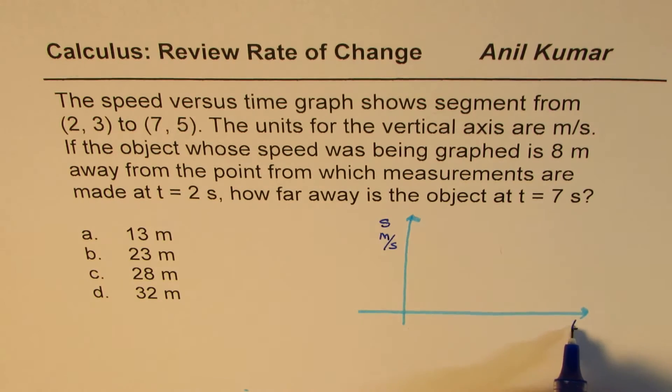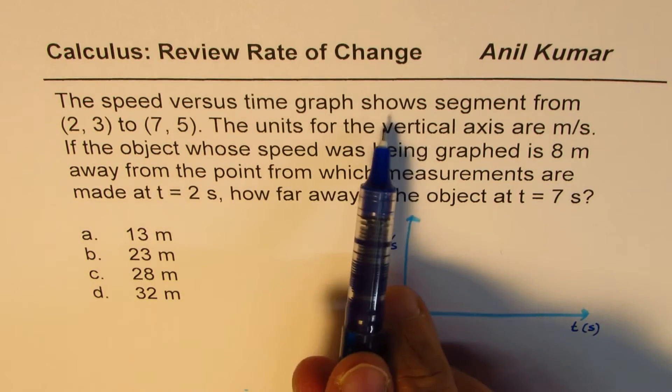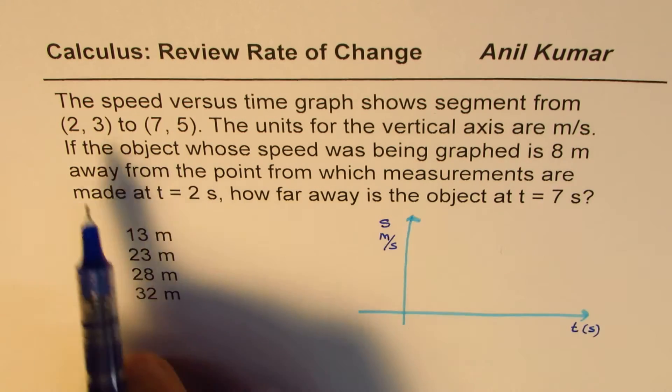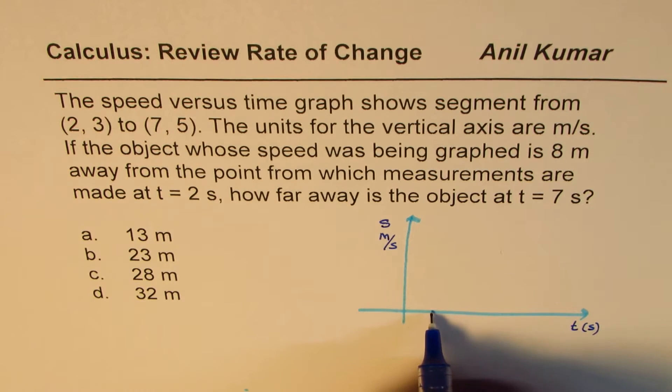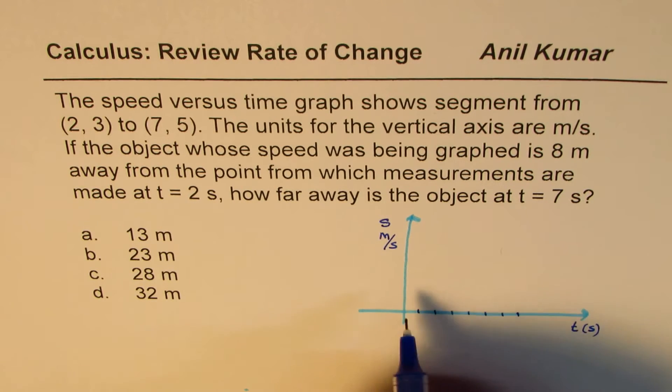We have an object that moves along the segment from (2,3) to (7,5). Let me make a scale here. So this is 1, 2, 3, 4, 5, 6, 7 on the horizontal axis. And vertically: 1, 2, 3, 4, 5, 6, 7 as well.